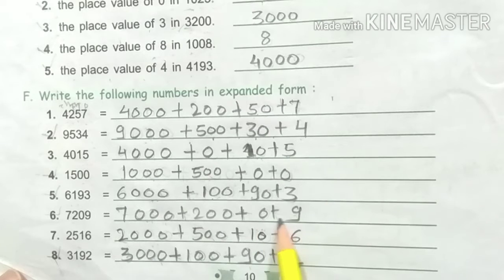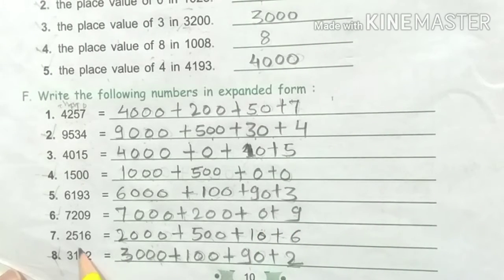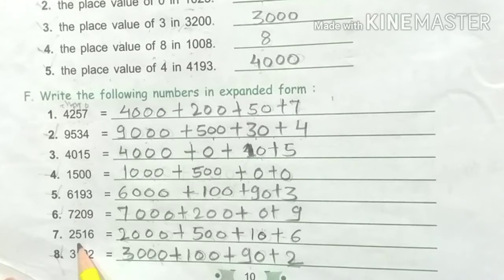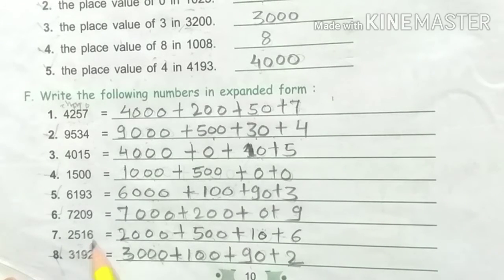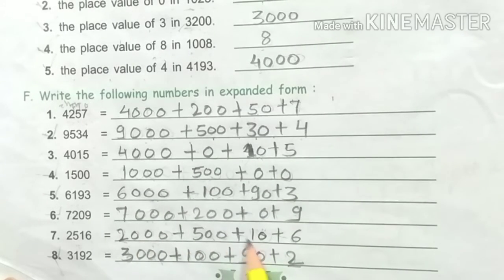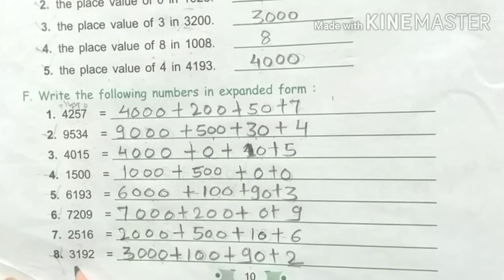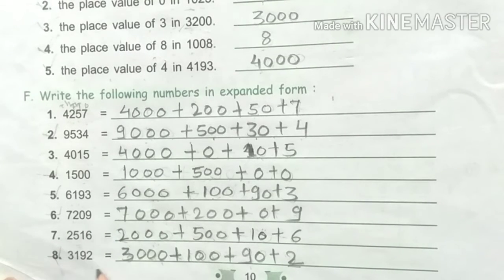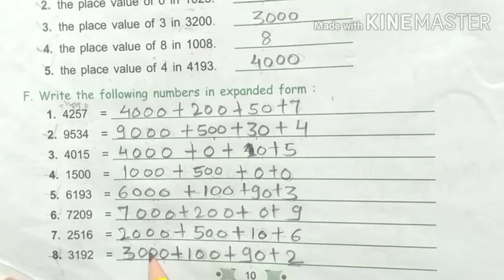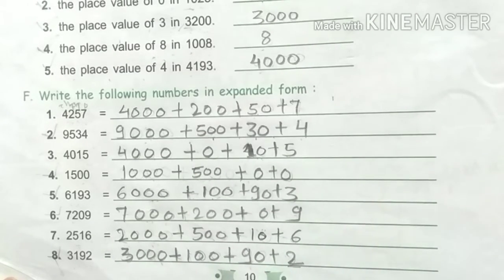Next, 7209: expanded form is 7000 plus 200 plus 0 plus 9. Next, 2516: expanded form is 2000 plus 500 plus 10 plus 6. Next, 3192: expanded form is 3000 plus 100 plus 90 plus 2.